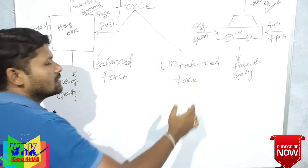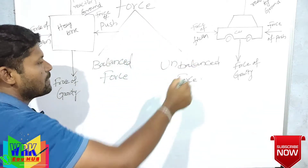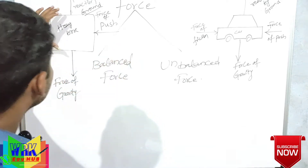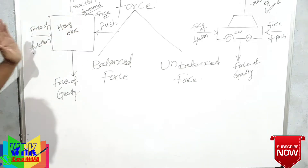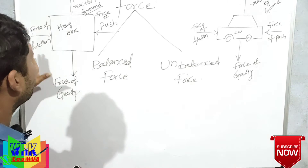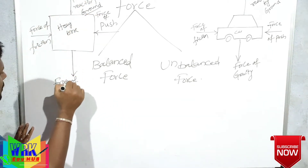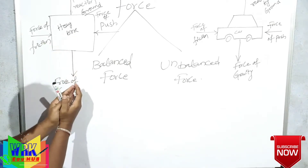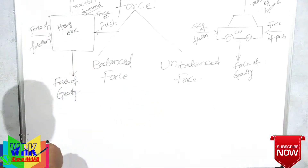That is balanced force and unbalanced force. Now, what is balanced force? First of all, take an object — that is a heavy box. From that heavy box, we have four types of forces. Towards the ground, force of gravity acts from the box. Weight of the box always acts towards the ground.